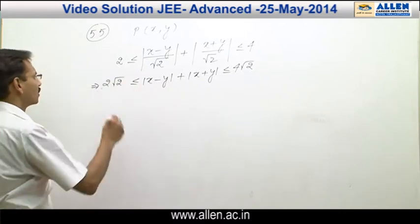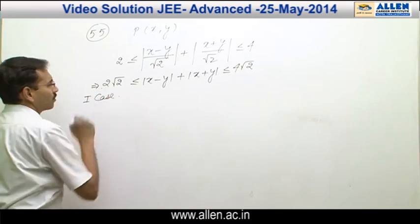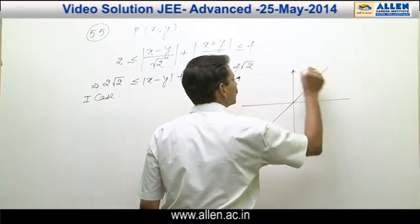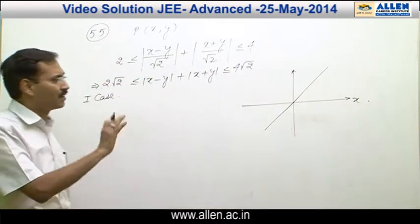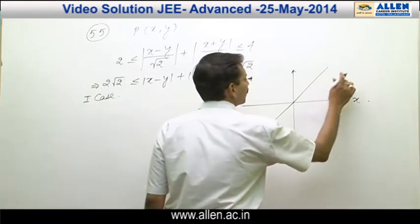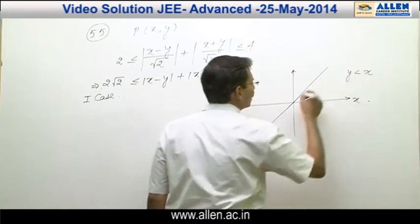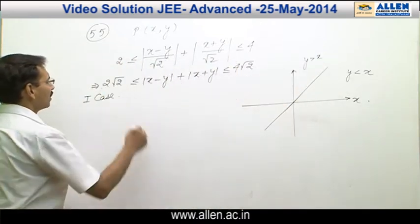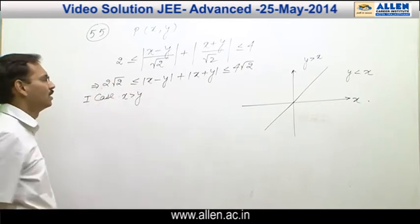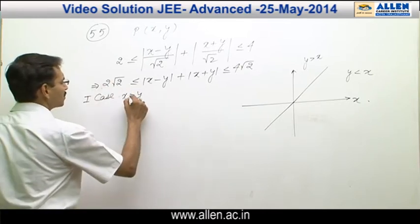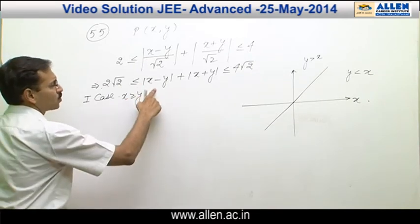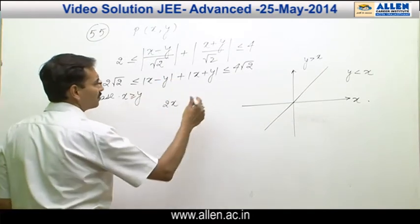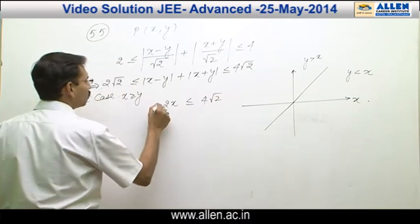Now we will make two cases to simplify, because we are in the first quadrant. The line y equals x divides the first quadrant into two parts: one where y is less than x, and one where y is greater than x. In Case 1, we consider x greater than or equal to y. Since x and y are already positive, mod(x minus y) plus mod(x plus y) becomes 2x, which lies between 2 root 2 and 4 root 2.